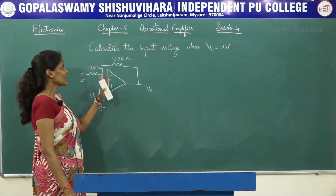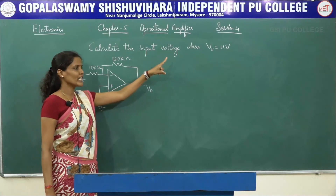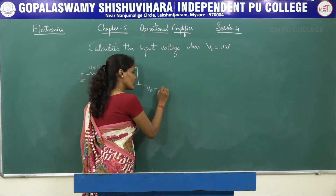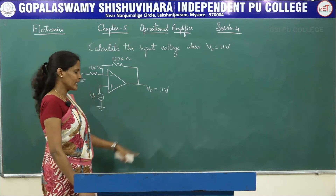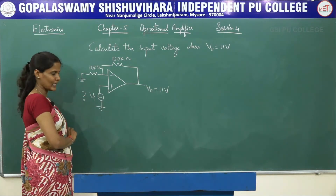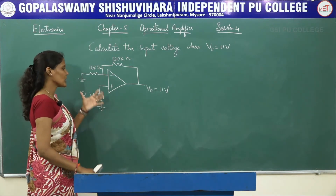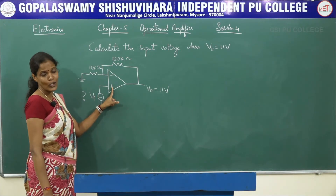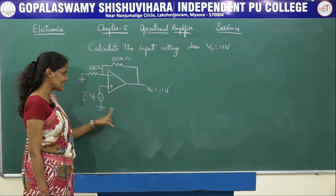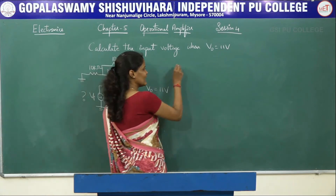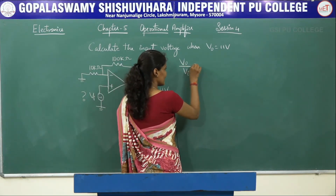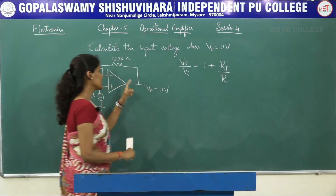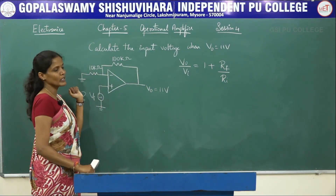Let us look into the second problem. The problem asks: calculate the input voltage when V0 = 11 volts. The output voltage is 11 volts and we have to find Vi. First, identify to which terminal the source is connected. The source is connected to the non-inverting input terminal of the op-amp, so this is a non-inverting operational amplifier. The formula is: V0/Vi = 1 + Rf/Ri, where Rf is the feedback resistor and Ri is the input resistor.